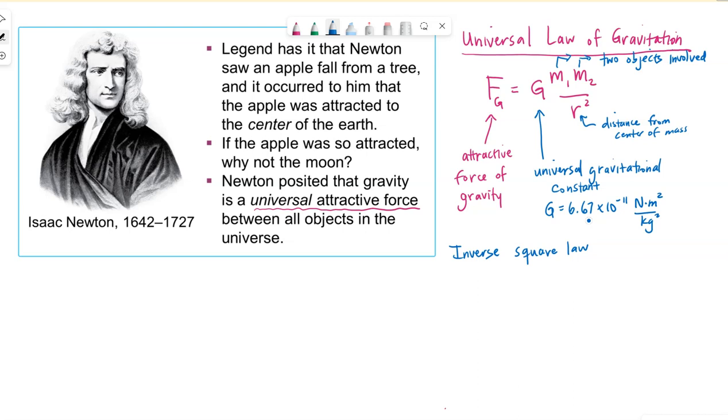For example, if we had the sun and the earth, and we wanted to change the distance, say we cut the distance between them in half. By cutting the distance in half, we have to square that change. So half the radius, the force would be four times bigger. That's the inverse square law relationship to distance squared.